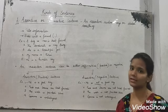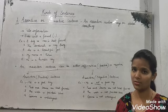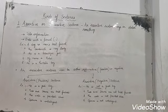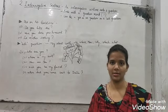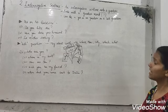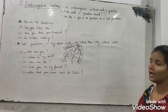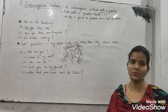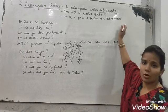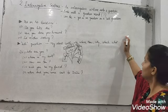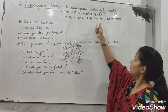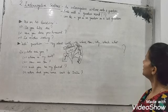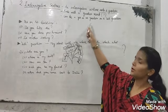So assertive or declarative sentences give you some information, end with a period, and are in the form of a statement. Now, the interrogative sentence: an interrogative sentence asks a question and ends with a question mark. It can be a yes-or-no question or a WH question. In interrogative sentences we have to remember that they will always ask a question.